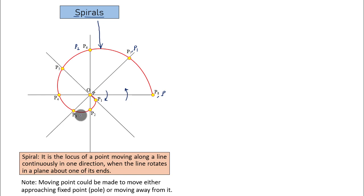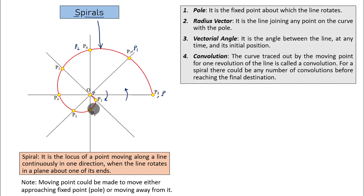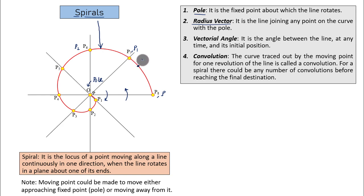Now let's move further and talk about common terminology associated with spirals. The pole is the fixed point — O over here is what you refer to as a pole. The radius vector is the line joining any point on the curve with the pole. So if I mark a point S on the curve and join it with the pole, the line OS is what you refer to as a radius vector.